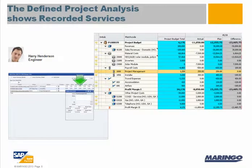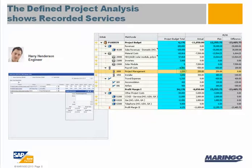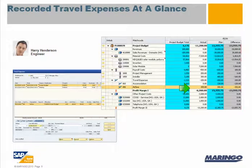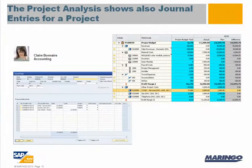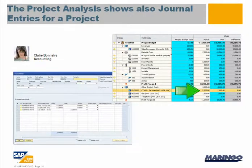When you open the analysis for the project, the system shows the current value in the table. The same applies to travel expenses — Harry Henderson captures his travel expenses, and you are able to view the corresponding value when opening the analysis the next time. The project analysis also shows journal entries for the project's fixed costs as soon as the costs have been posted.